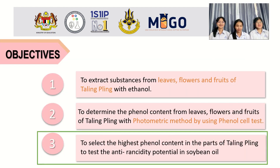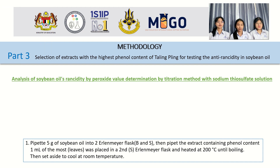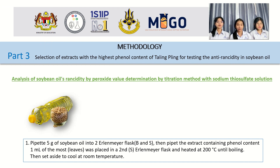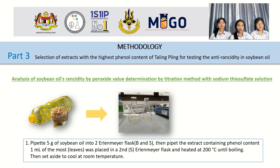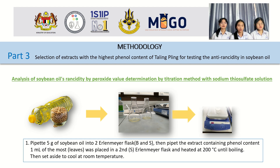The next topic is Objective 3: to select the highest phenol content expressed in the part of bilimbi to test the anti-rancidity potential in soybean oil. Analysis of soybean oil rancidity by peroxide volume determination by titration method with sodium thiosulfate solution. Step 1: prepare 5 grams of soybean oil into 2 conical flasks. Then prepare the extract containing phenol content — 1 ml of the bilimbi leaf extract — spray in sample conical flasks and heat at 200 degrees Celsius, then set aside to cool and add to room temperature.